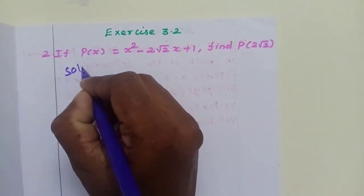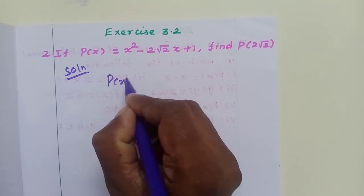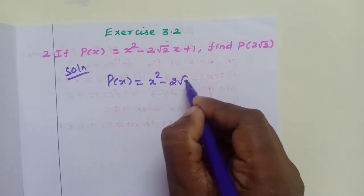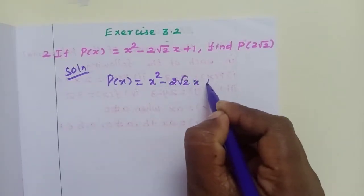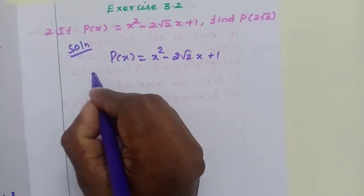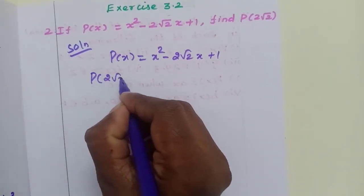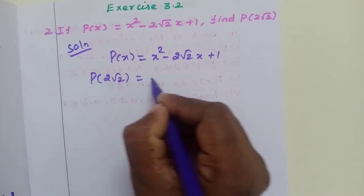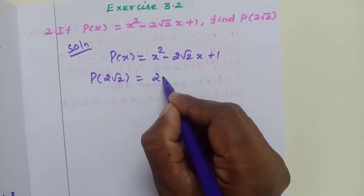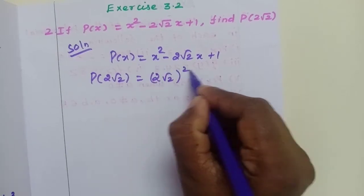So p of x equals x squared minus 2 root 2 x plus 1. To find p of 2 root 2, substitute x equal to 2 root 2 on the polynomial.